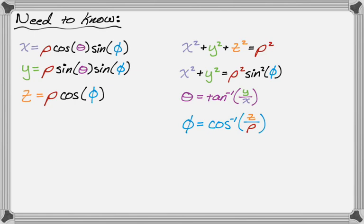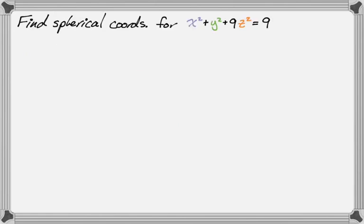Okay, so those are things we need to know—not all of them for this video, but maybe. Let's get started. We want spherical coordinates for x² + y² + 9z² = 9, and I'm actually going to do this in kind of a weird way. We also want to write parametric equations.